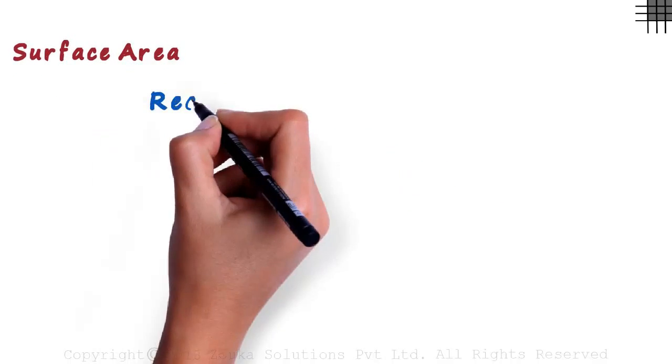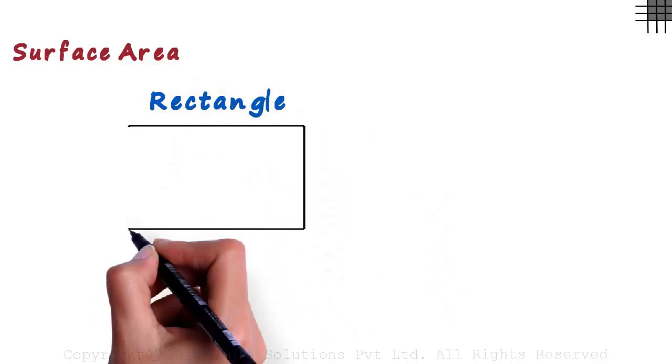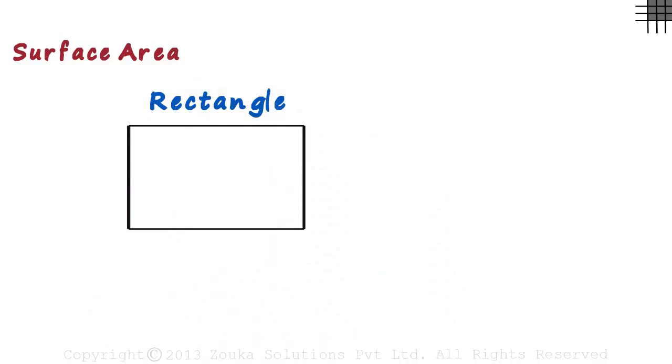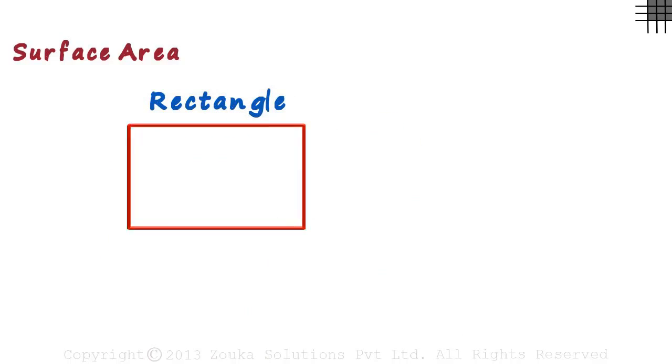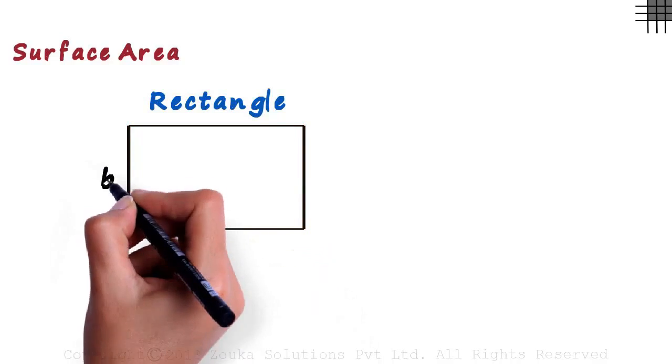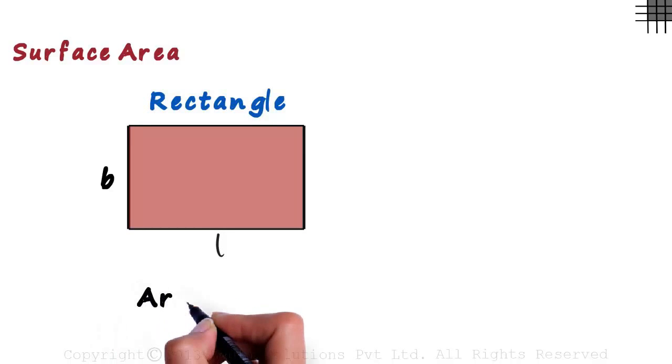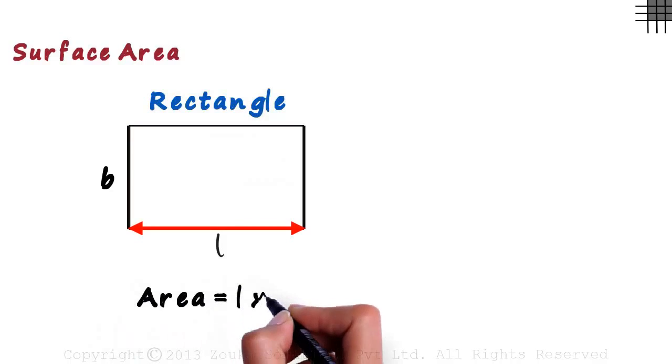First, let's look at what surface area means. We all know how a rectangle looks like. Something like this. There are two things that define a rectangle: its length and its breadth. So what is its surface area? It's simple. It is the area of the surface it covers. Its area is defined as its length multiplied by its breadth.